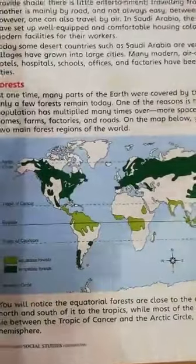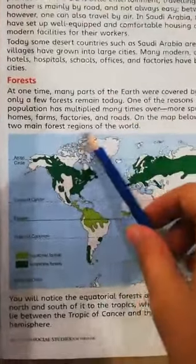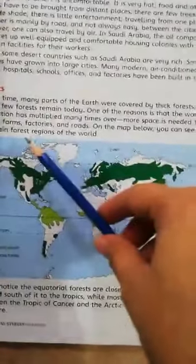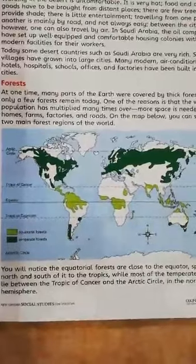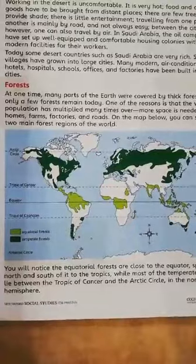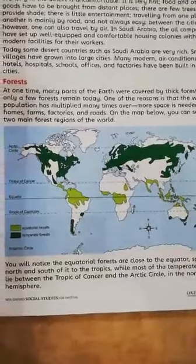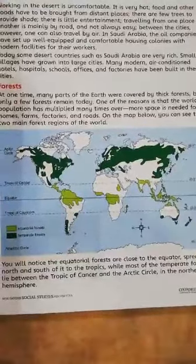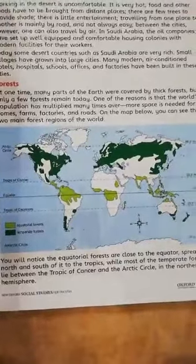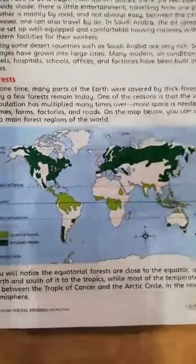At one time, many parts of the earth were covered by thick forests, but only a few forests remain today. One of the reasons is that the world's population has multiplied many times over — more space is needed for homes, farms, factories, and roads. Because of the increase in population, land that was once covered with forests is now covered with buildings, roads, factories, and farms. That is why forests are being cut down.